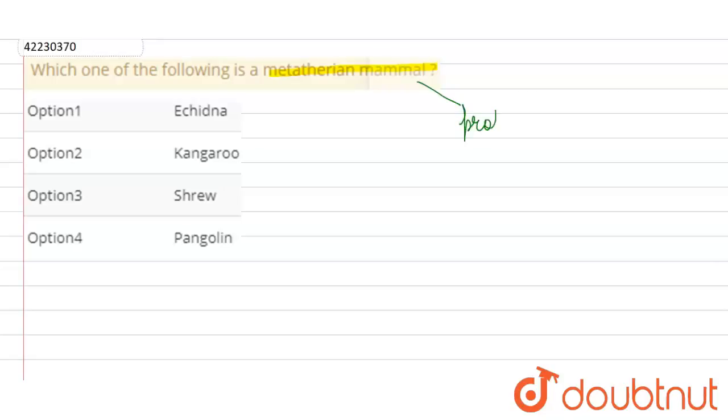The first group we have is Prototheria, which we also call Monotremata. If we place some primitive type of mammals, then platypus and echidna are members.